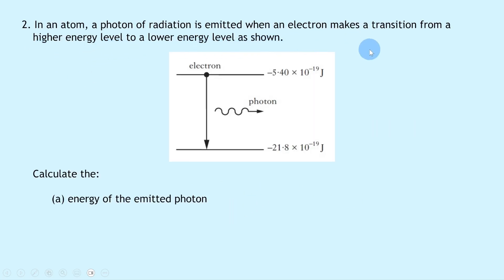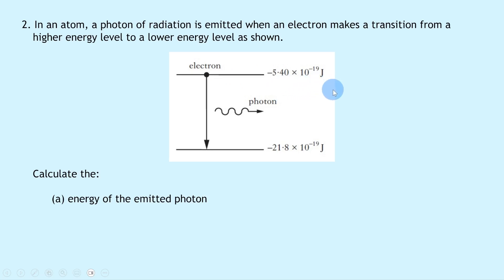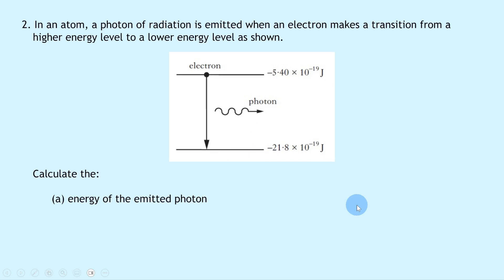Question two says: in an atom, a photon of radiation is emitted when an electron makes a transition from a higher energy level to a lower energy level, as shown. The higher energy level has a value of minus 5.40 × 10⁻¹⁹ joules, and the lower energy level has a value of minus 21.8 × 10⁻¹⁹ joules.